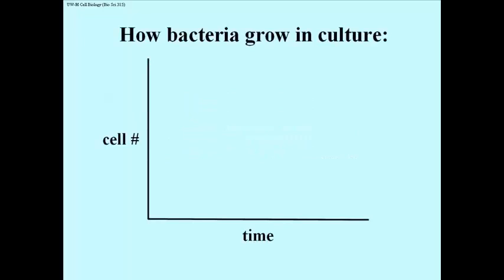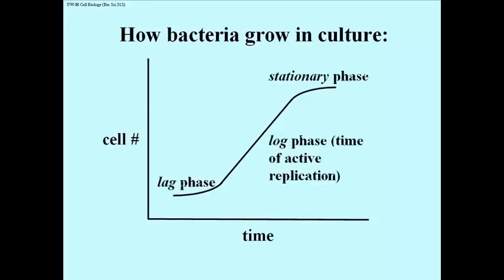If you place a few cells in a liquid culture, here's what you would see if you followed growth over time. We count the number of cells and plot that on the y-axis at different times. Here's the S-shaped curve that we get, which is very characteristic of cell growth in general. In bacteria, we refer to the period when doubling seems fairly infrequent as the lag phase, followed by a period when cells double very frequently — that's called the log phase, the time of active replication.